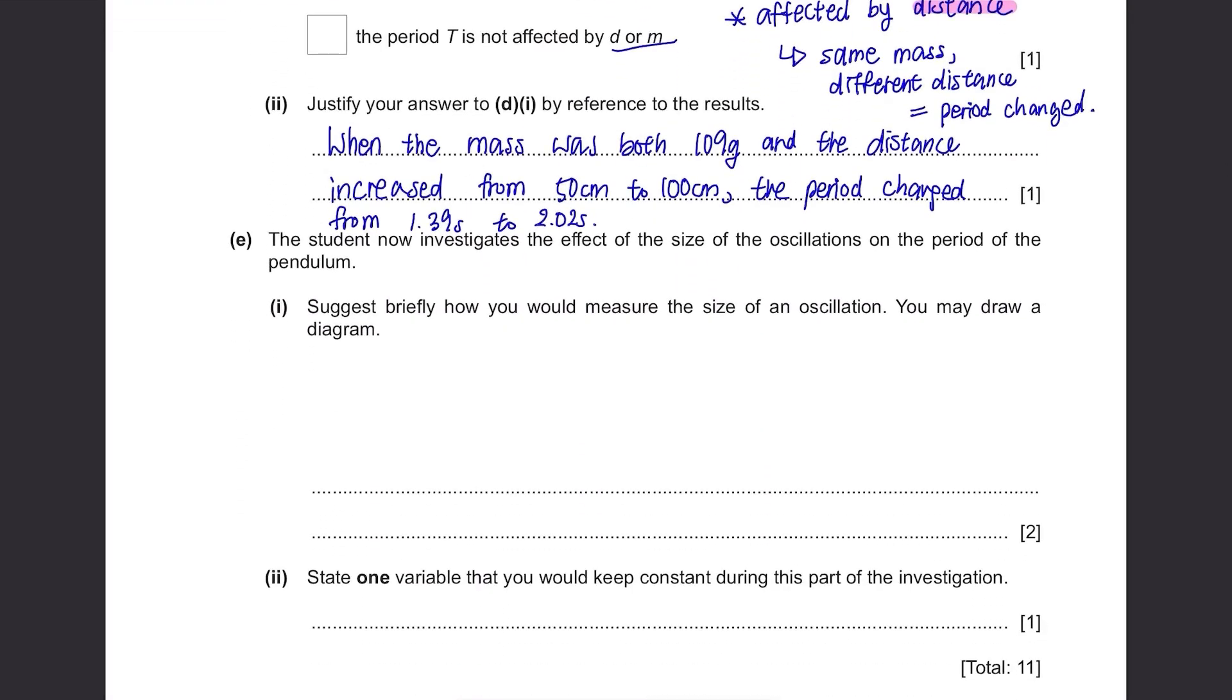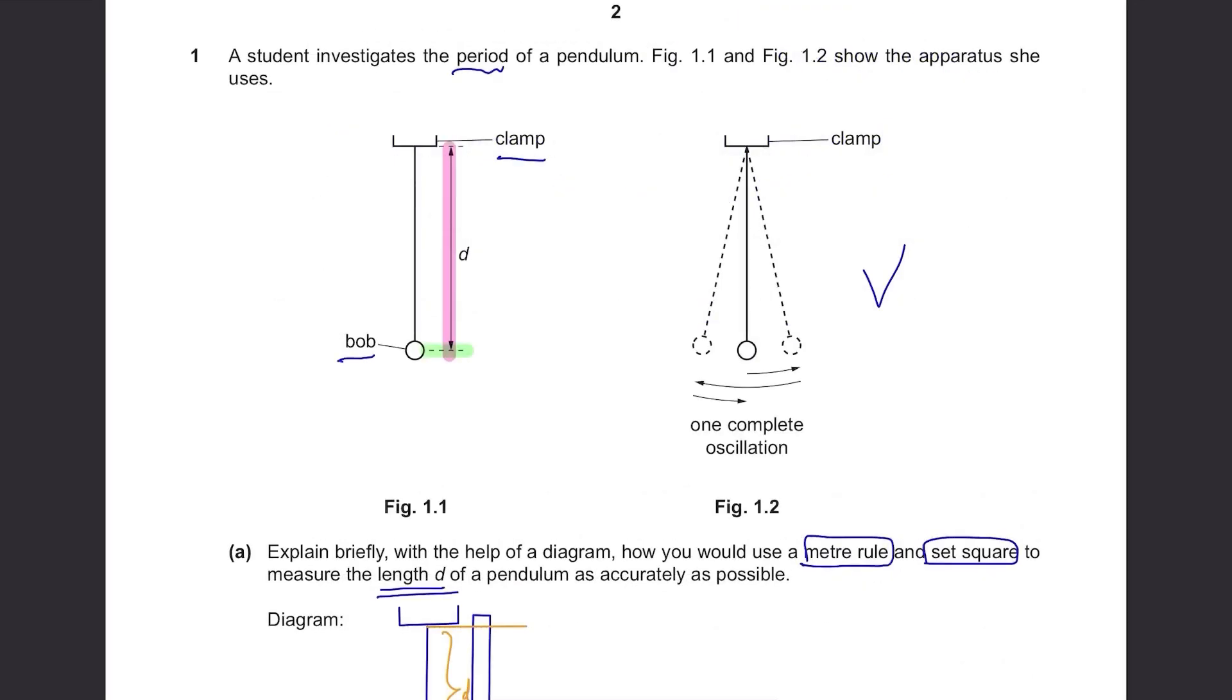The student now investigates the effect of the size of the oscillations on the period of the pendulum. Suggest briefly how you measure the size of an oscillation. You may draw a diagram. This is the size of an oscillation that they are talking about. To measure this, place a ruler at the bottom of the pendulum with the center of the ruler at where the bob is when it's stationary. Then as it moves from left to right, record a point on the ruler where the bob has travelled the furthest. The size will decrease for every oscillation since the pendulum will slowly stop moving.